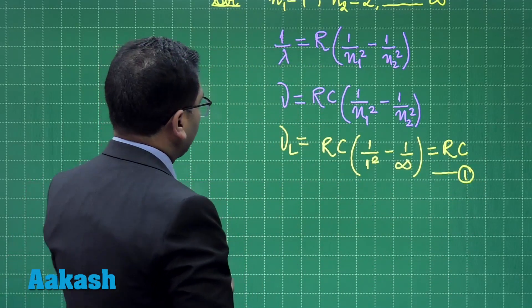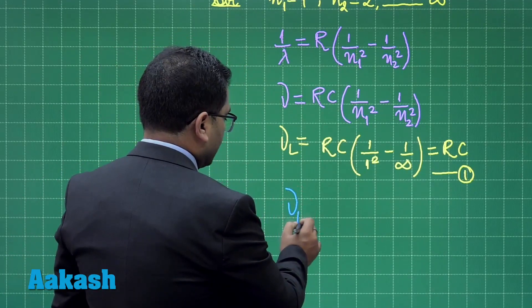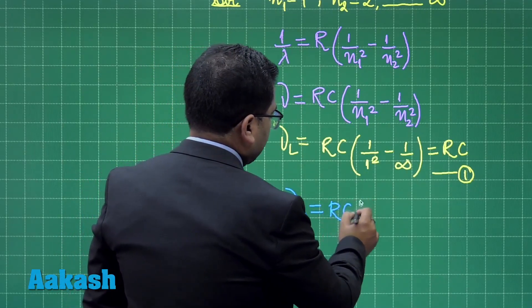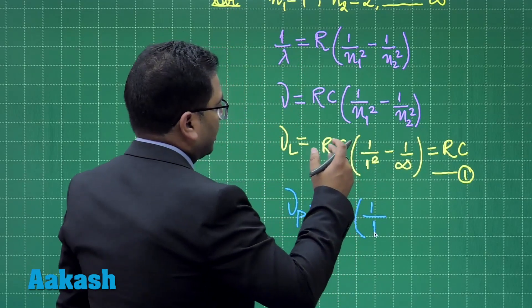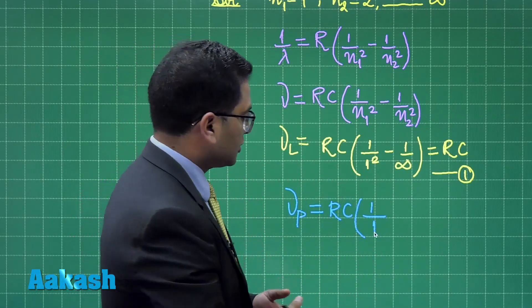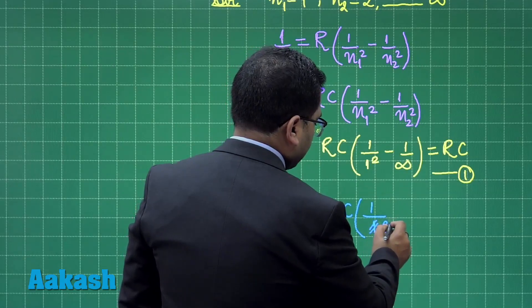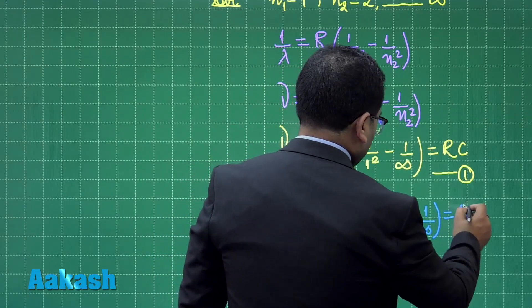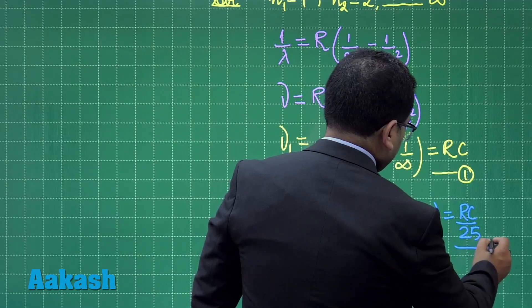Now let us try to calculate for the Pfund. And for the Pfund series, let me call this as nu P. And that is going to be equals to R, C. Again, the limit. So this will be Lyman, Balmer, Paschen, Brackett and Pfund. So this value is going to be 5. So 5 square, that will be 25 minus 1 by infinity. So this is coming out to be R, C by 25. Let us call this as equation number 2.